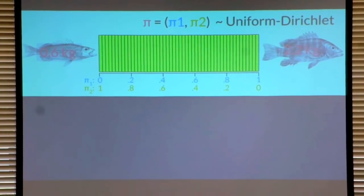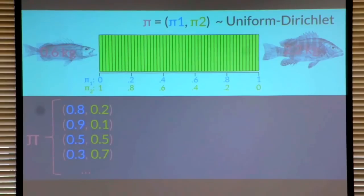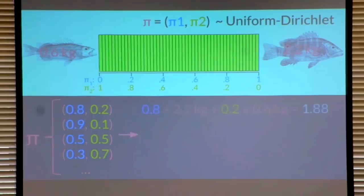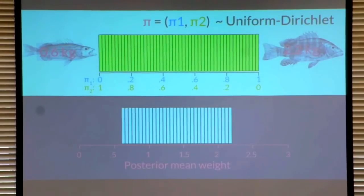Now we have a probability distribution representing what's uncertain, and we can sample from it. For each sample — say weights of 0.8 and 0.2 — we calculate what the population mean would be if those were the true probability weights. This time it was 1.88. We do this for all our samples, and the resulting distribution of population means actually looks like a uniform distribution between 0.6 and 2.2.